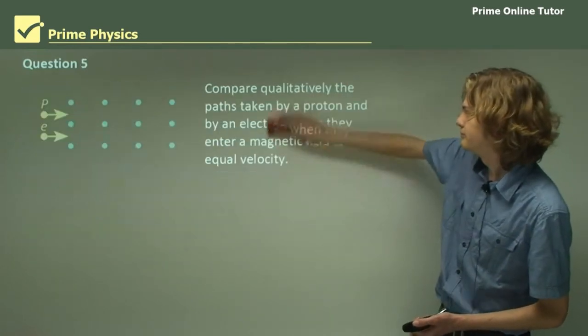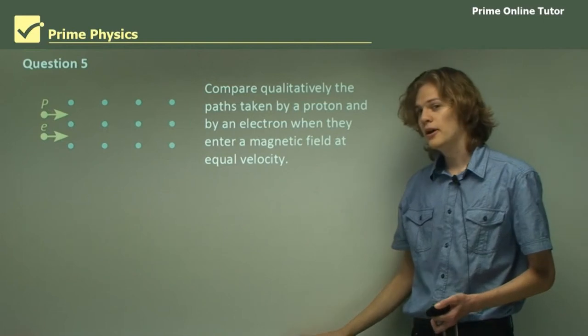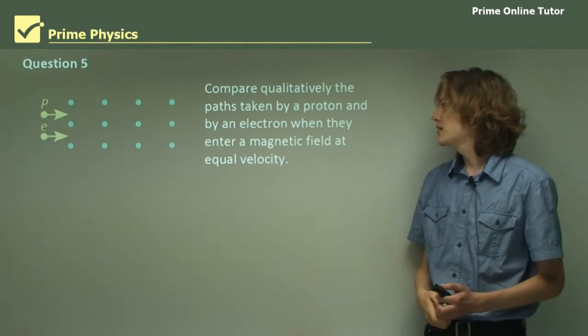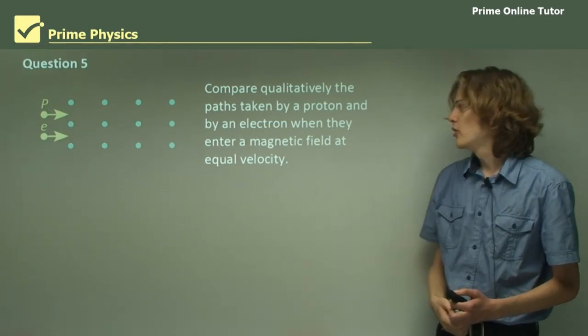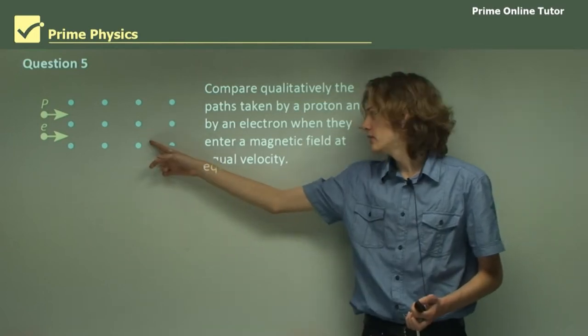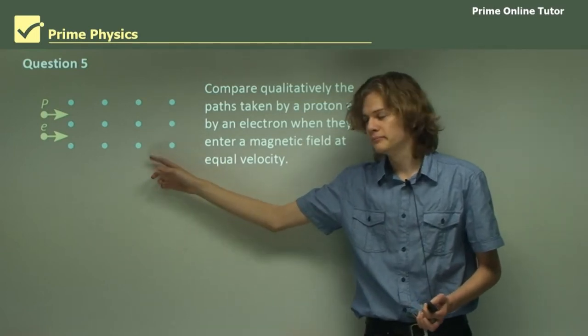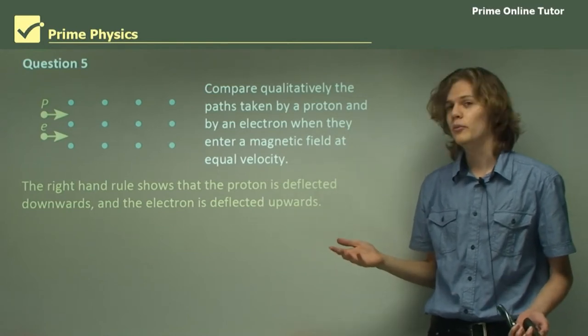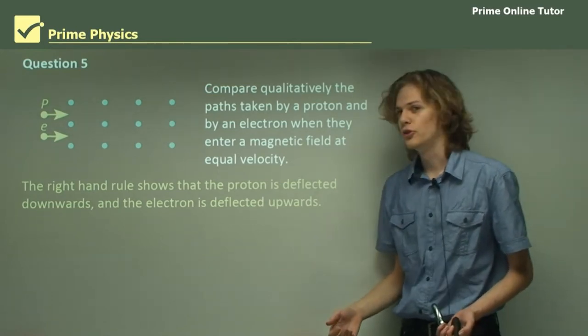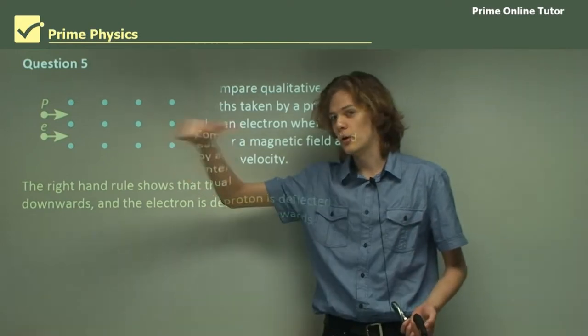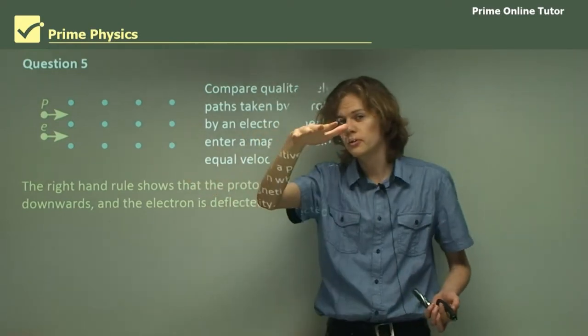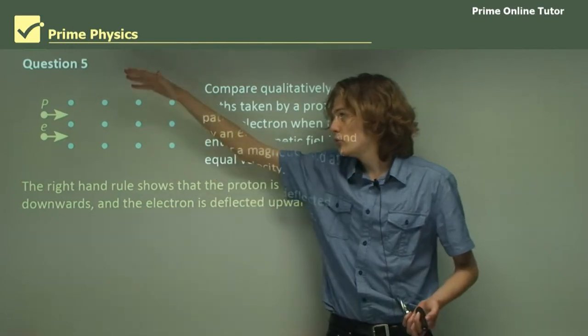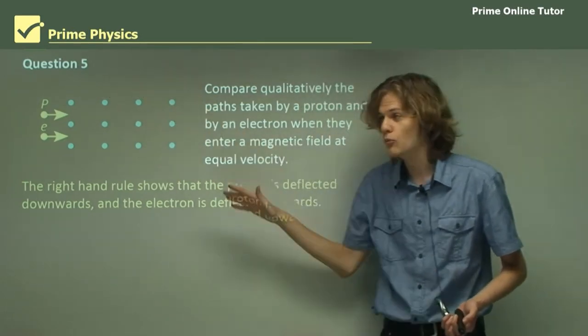On to question 5. Compare qualitatively the paths taken by a proton and by an electron when they enter this magnetic field at equal velocity. We can use the right-hand rule to determine which direction they'll be deflected in. For the proton, the positive charge velocity is this way. The magnetic field is towards you, so the force it experiences is downward. Therefore, we can figure out the proton must be deflected downwards.